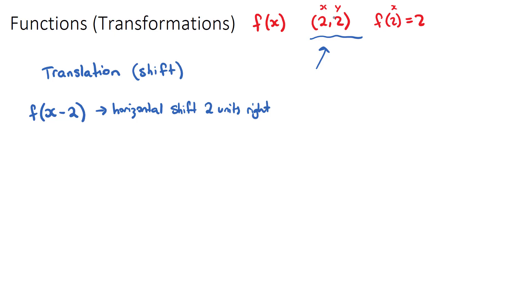What that means for our point of interest is that the point would be shifted 2 units to the right. The x value changes but the y value doesn't, since there was no vertical shift. So our original point (2, 2) becomes (4, 2) — the x value moved from 2 to 4, and the y value stayed the same.